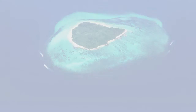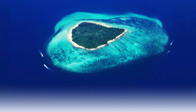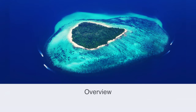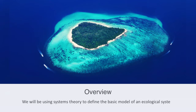In this module we'll be using systems theory to define the basic model of an ecological system. We'll firstly give a brief outline to the model of a system in the abstract, before going on to use this to interpret this thing we call an ecology.